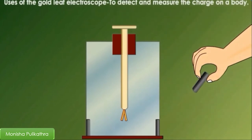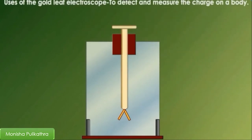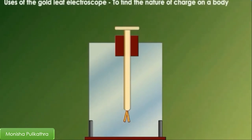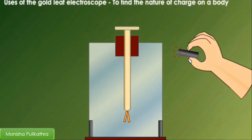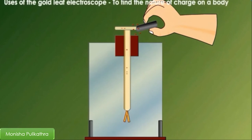The body to be tested is touched to the brass disc of the uncharged electroscope. If the body is charged, the leaves of the electroscope diverge. The amount of divergence of the leaves is the measure of the amount of charge on the body. To find the nature of the charge on the body, it is first necessary to charge the electroscope positively or negatively — this is done by touching the brass disc with a positively or negatively charged body. The leaves acquire the same charge as the charged body and diverge.